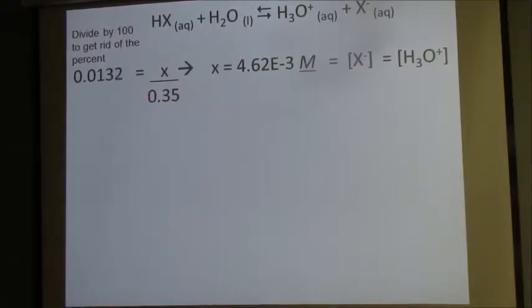Now all I'm solving for is the concentration at equilibrium, so x. So x is just 4.62 times 10 to the negative third moles per liter, and so that's this concentration and that's this concentration. Now I know everything I need to know to be able to calculate Ka.